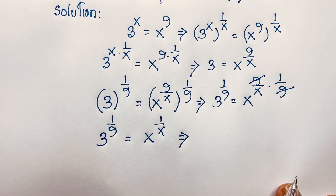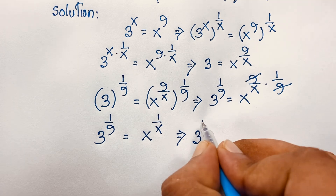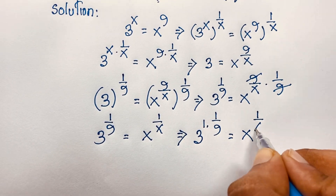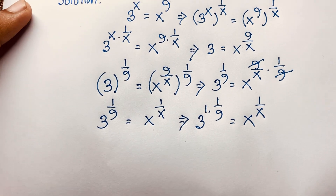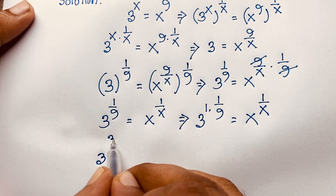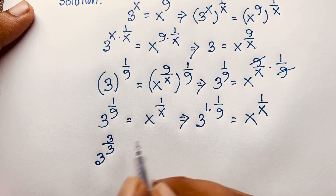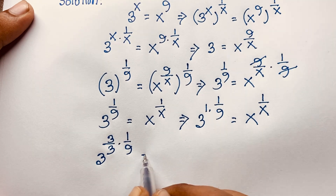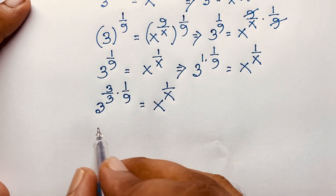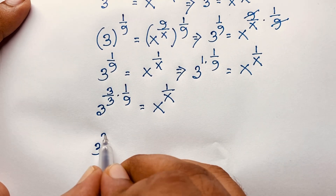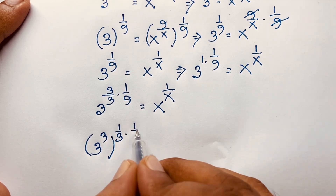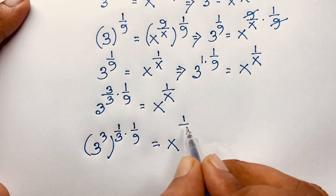Looking at this expression, we can rewrite the left side. The exponent 1 over 9 can be written as 1 times 1 over 9. Now, I rewrite 1 as 3 over 3 — since 3 divided by 3 equals 1. So the exponent becomes 3 over 3 times 1 over 9. Taking the 3 out as a base, we get: 3 to the power 3, bracket to the power 1 over 3 times 1 over 9, is equal to x to the power 1 over x.